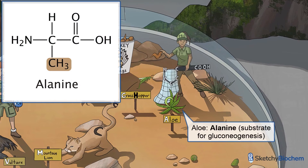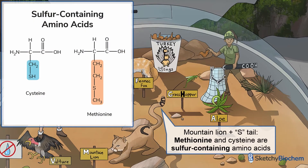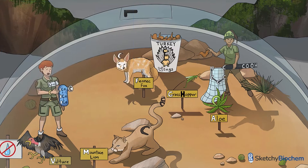Let's take a look at this aloe plant representing alanine. Alanine is one of the major substrates for gluconeogenesis. Alanine is also important during the Cahill cycle — you can check out those sketches to learn more. See this kitty's wavy S tail? The S is for sulfur, because methionine is one of the two sulfur-containing amino acids. Methionine is a precursor to SAM, which transfers methyl groups for many reactions. Methionine is also needed to make cysteine, another sulfur-containing amino acid.